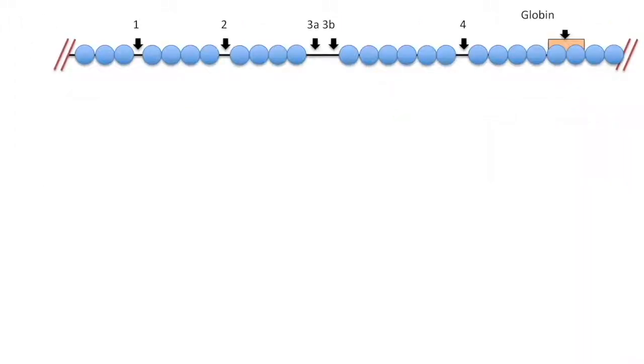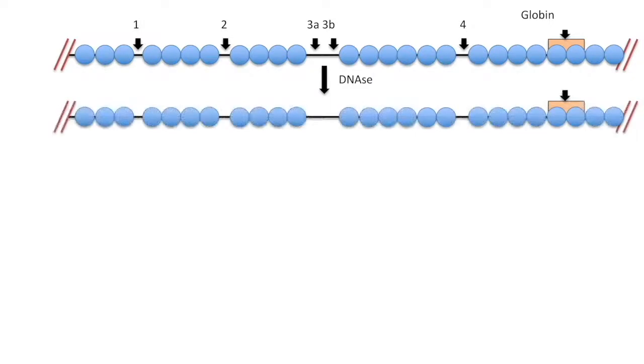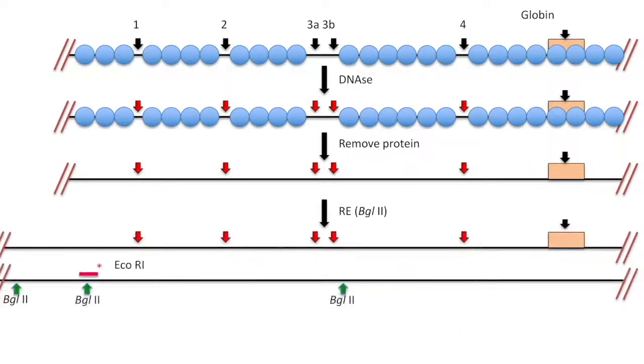Let's look at how they found two more hypersensitive sites. The protocol is the same, except that they used Bagel 2 restriction enzyme, which gives two fragments near the globin gene control region. An equal R1 fragment of probe was used.